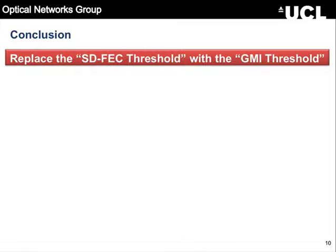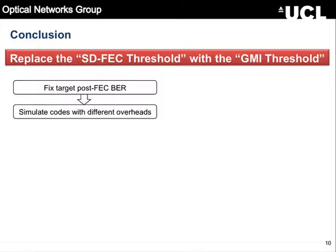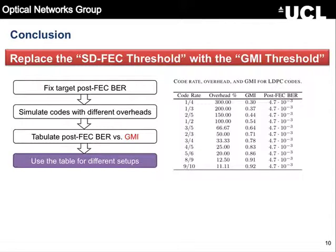So what is this GMI threshold? The idea we're putting forward is: fix your target post-FEC BR, say 10 to the minus 6 or 10 to the minus 15, whatever you want. Pick your family of LDPC or turbo codes. Simulate them with QPSK. Generate a table where you say the generalized mutual information measured for this particular code rate was this value, and with that you can guarantee a post-FEC BR. Print the table and never simulate or implement a code again. Just go to your lab, and whenever you run a different setup, measure the GMI, go to your table, and if your GMI was 0.86, rightly claim that there is a code with 20% overhead that can give you the desired post-FEC BR.